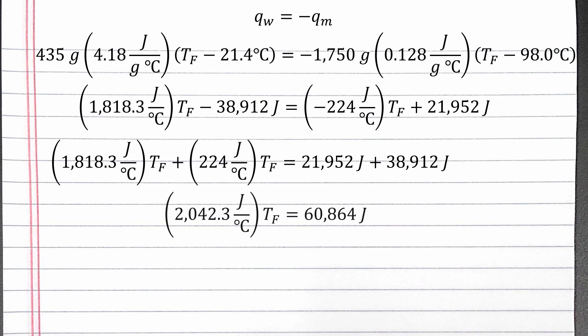Combining coefficients, 1818.3 plus 224 is 2042.3 times T final. On the right, 21,952 plus 38,912 is 60,864 joules.